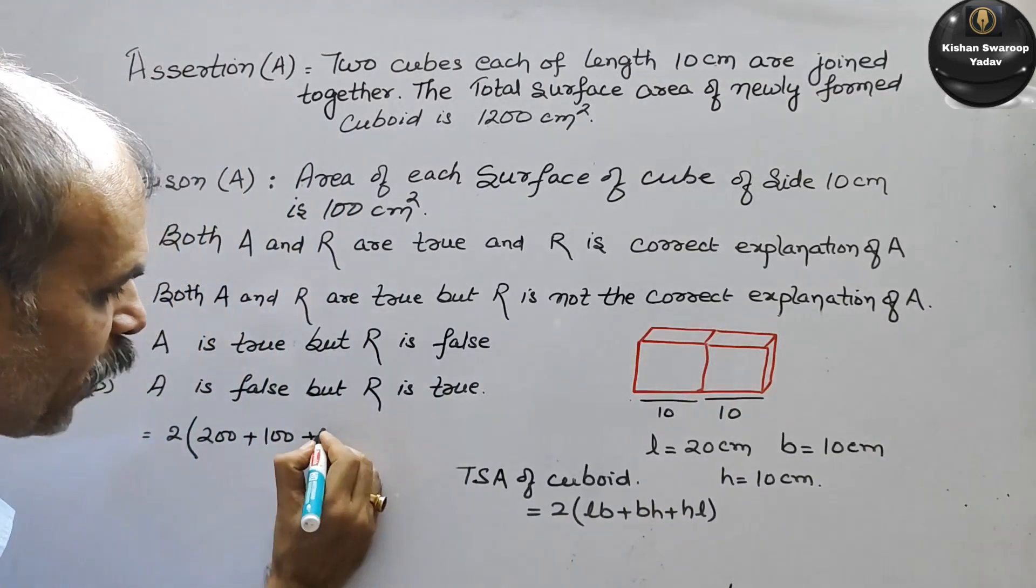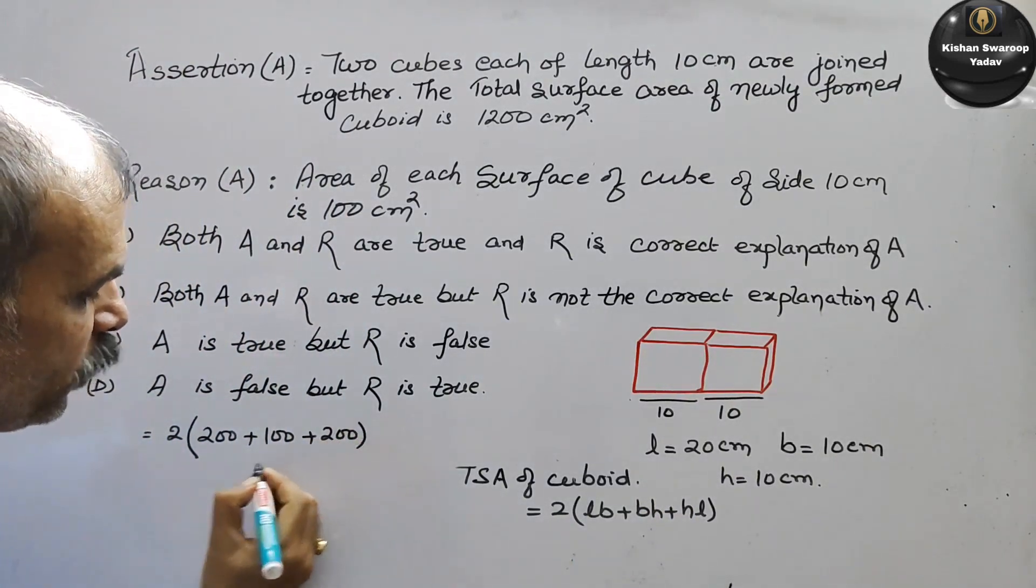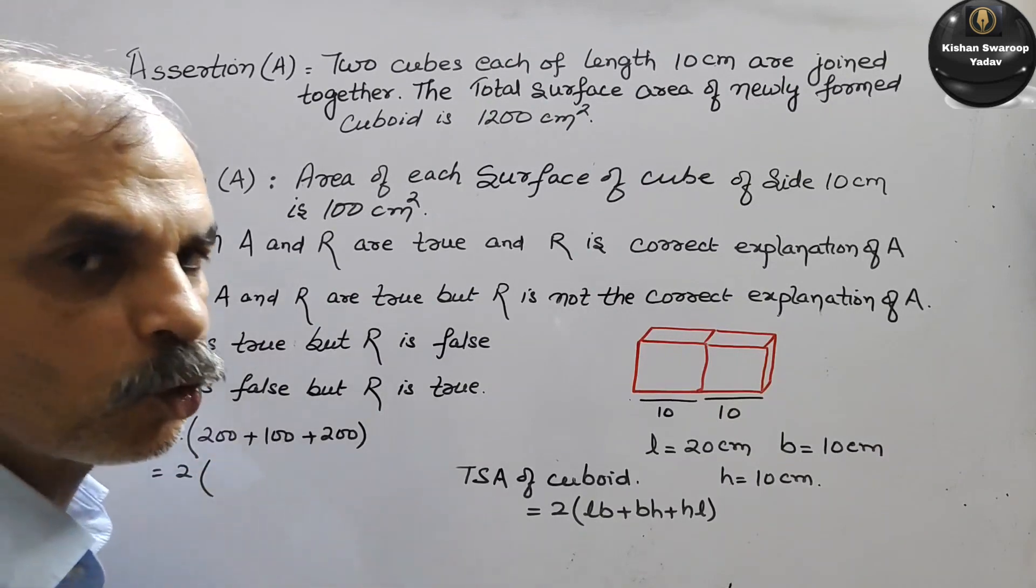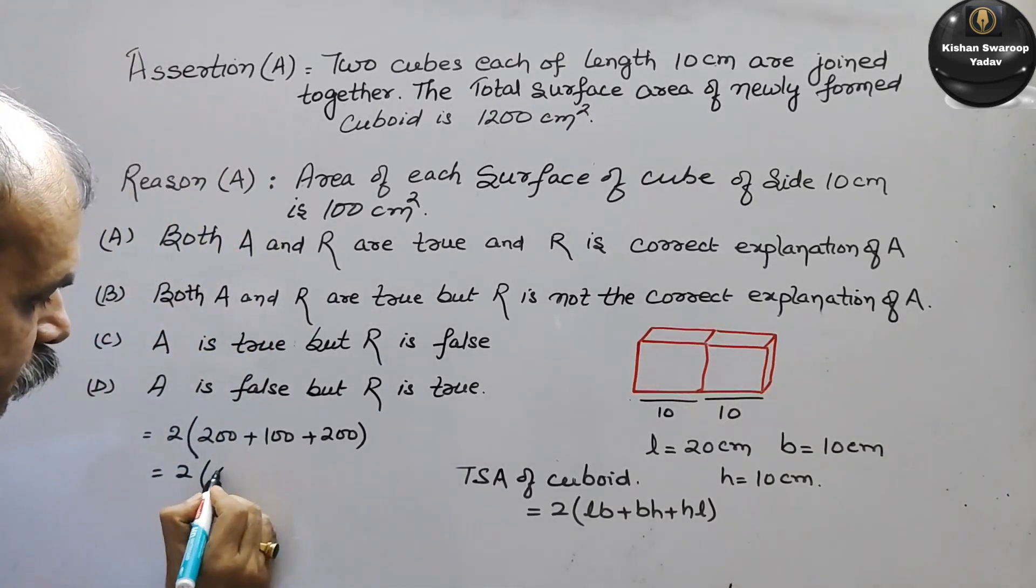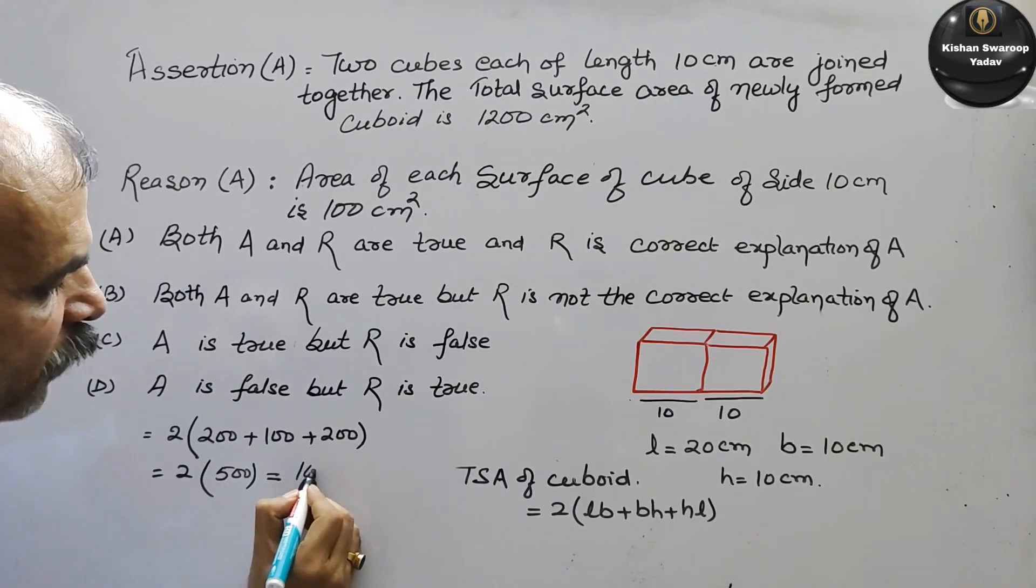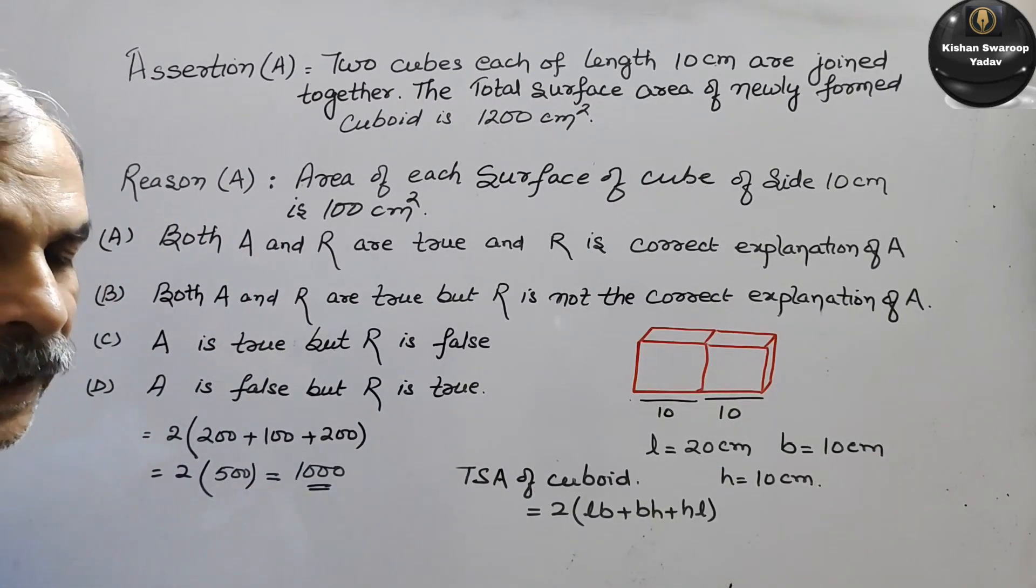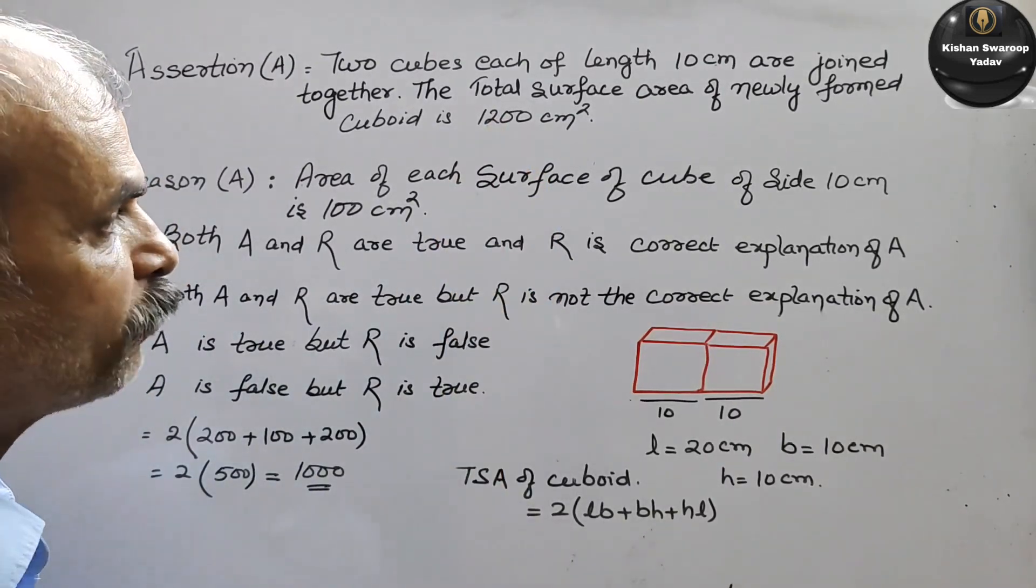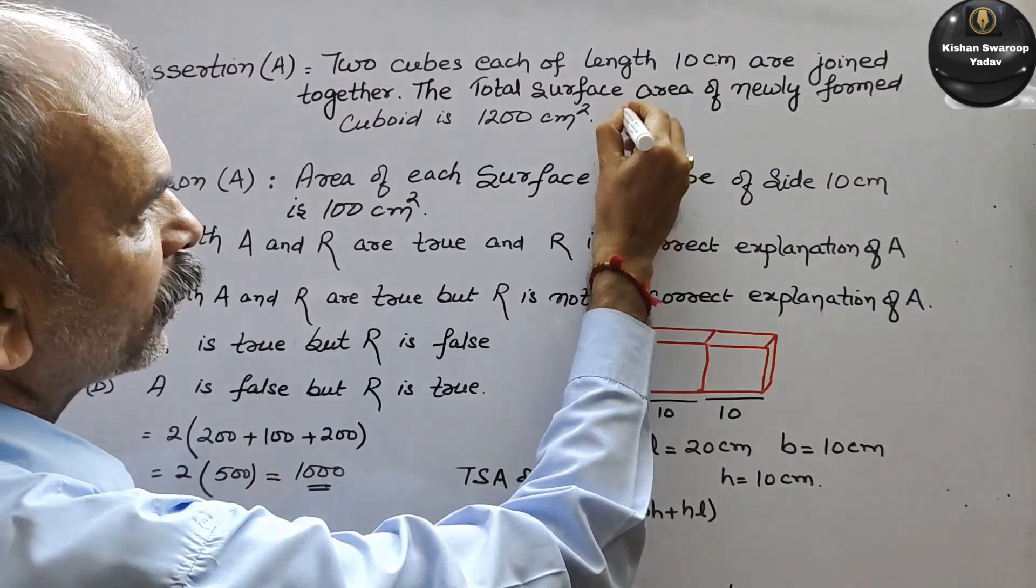Again, that means 200. So this becomes 2 into 200 plus 100 plus 200 is 500. So 2 into 500 is 1000. But this gives 1200. So that means the first one is false.